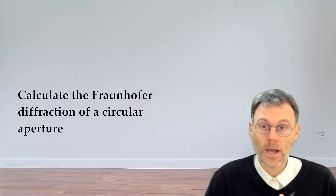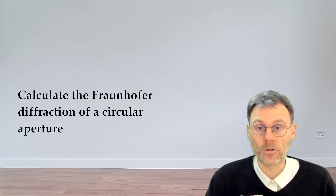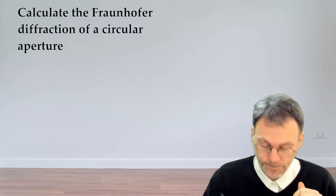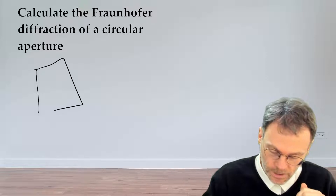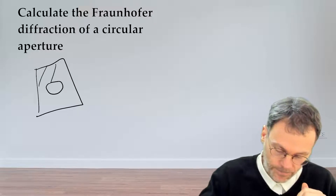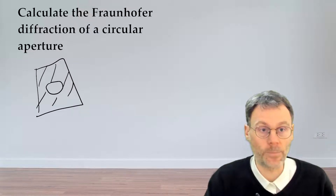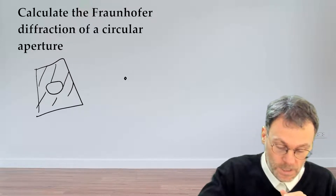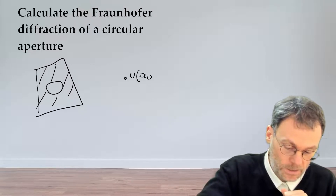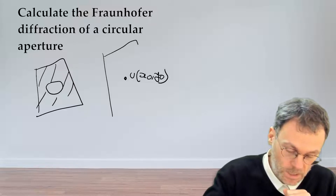Short question but rather long exercise: calculate the Fraunhofer diffraction pattern of a circular aperture. To sketch the problem, you have a circular aperture in an opaque screen, and light shines through it. The question is: what is the field, which we will denote by u(x₀, y₀)?